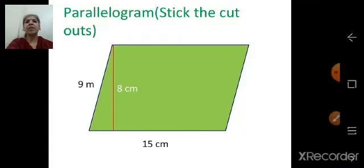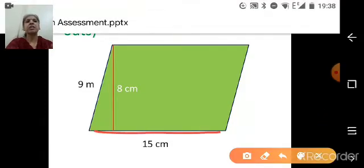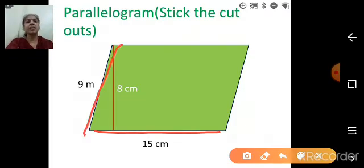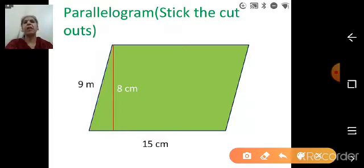Now, here one example I have given you. For example, parallelogram. You are going to stick the cutout. And you have to write the measures. For example, the sides of the parallelogram have been given. Adjacent sides have been given. One side is 15. Another adjacent side is 9. And you know that opposite sides of the parallelogram are congruent. So this side is 15. Opposite side is also 15. Right? And if this side is 9, then opposite side is also 9. Right, children?